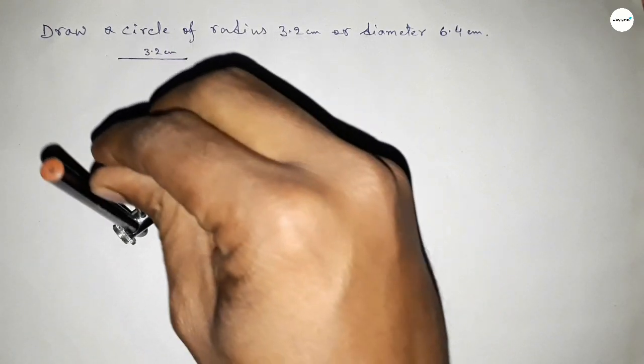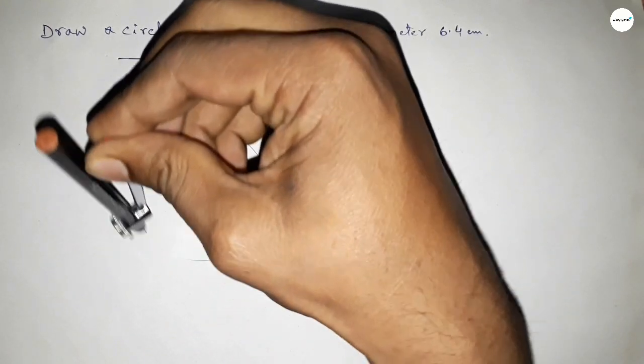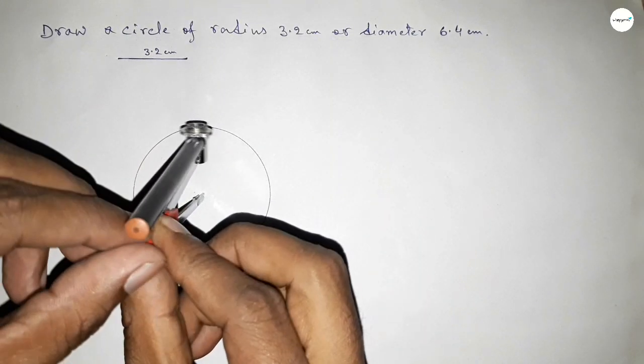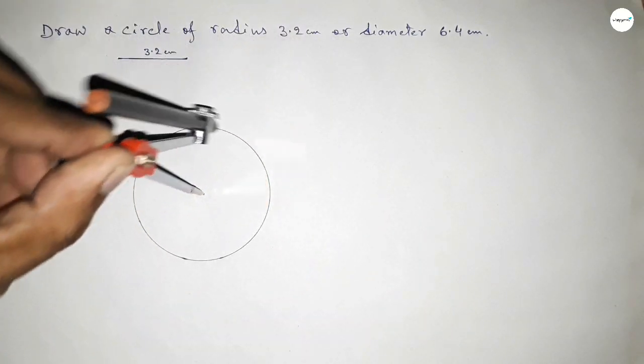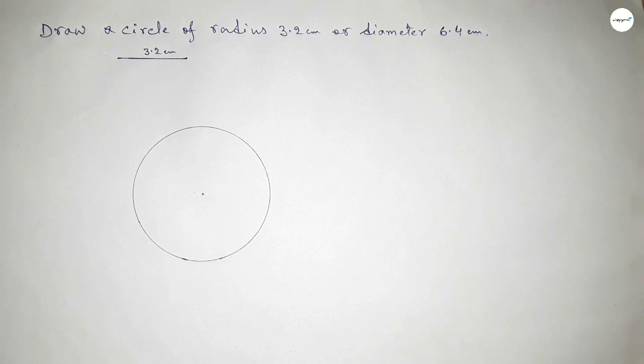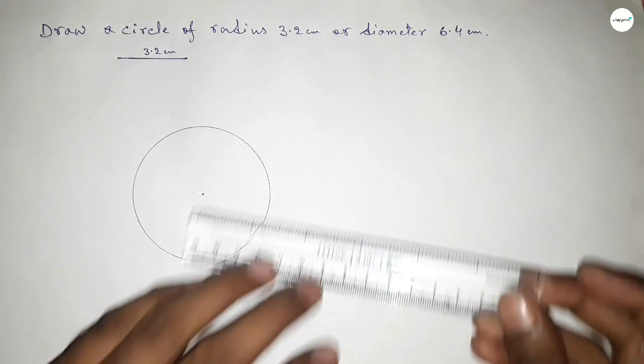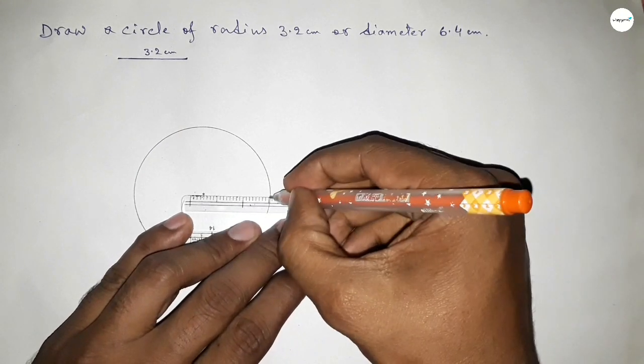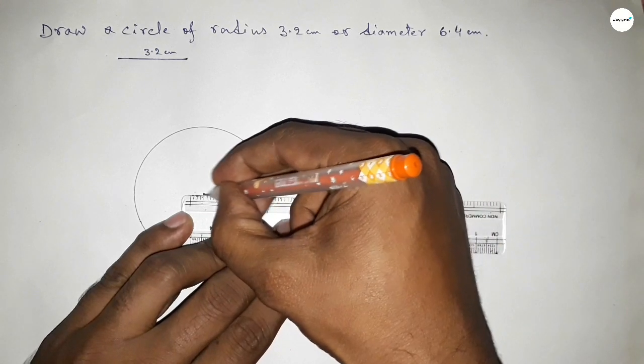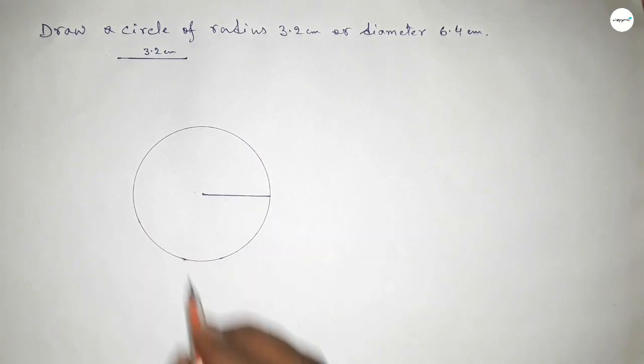Next, we have to draw an arc this way, which represents a circle with radius 3.2 centimeters. Now joining this one.